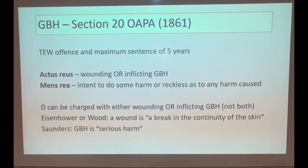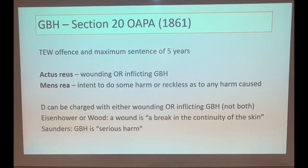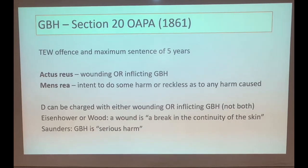GBH Section 20 is found in the Offences Against the Person Act. It is triable either way with the same five-year maximum sentence as ABH. The actus reus is wounding or inflicting grievous bodily harm. The mens rea is intent to do some harm or recklessness as to any harm caused. The defendant can be charged with either wounding or inflicting GBH - not both.